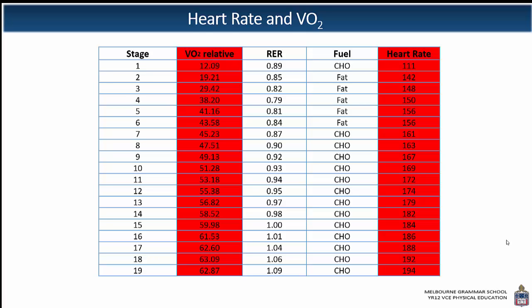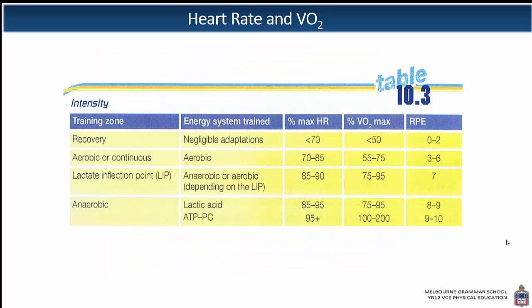Here's a practical example of an incremental treadmill test. As the stage number goes up, that means intensity goes up — either with speed or with gradient. You can see the relative VO2 increases with those numbers. If you were to plot that, it would be a relatively straight line — a linear relationship with exercise intensity. Likewise with heart rate, as exercise intensity increases, VO2 and heart rate both increase.